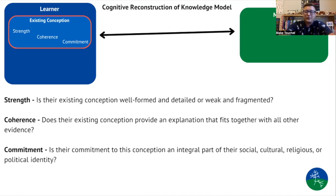Is it coherent with the evidence they are going to be working with in the classroom? Or, if we're talking about an adult and not a student, is that person's misconception coherent with all other evidence they might receive from the news, media, or their friends and family? If it's incongruent with other existing evidence, then it's going to be a little bit easier to resolve. The last part is their commitment to that misconception — is it an integral part of their identity, defining who they are in a social, cultural, religious, or political context?